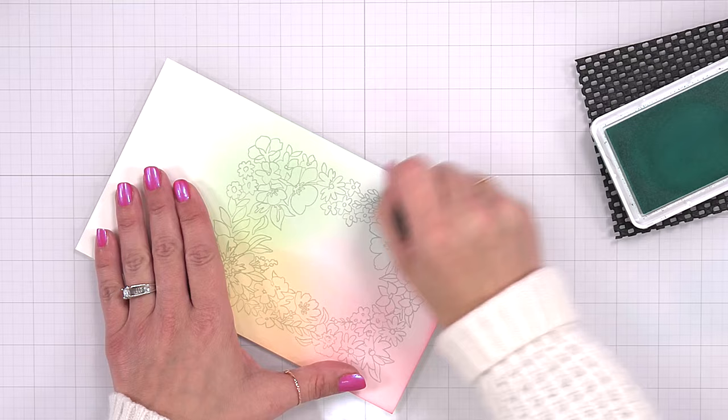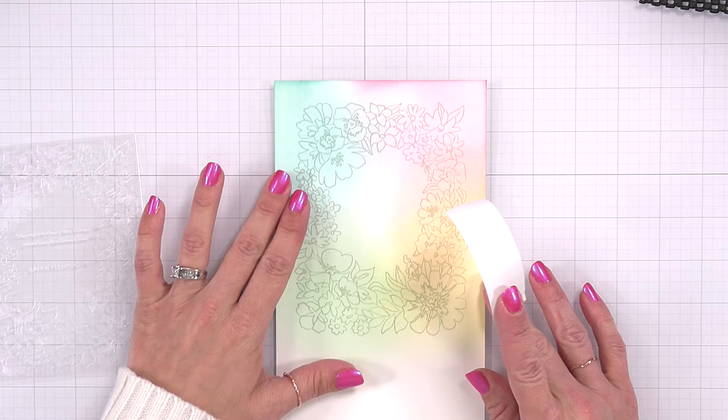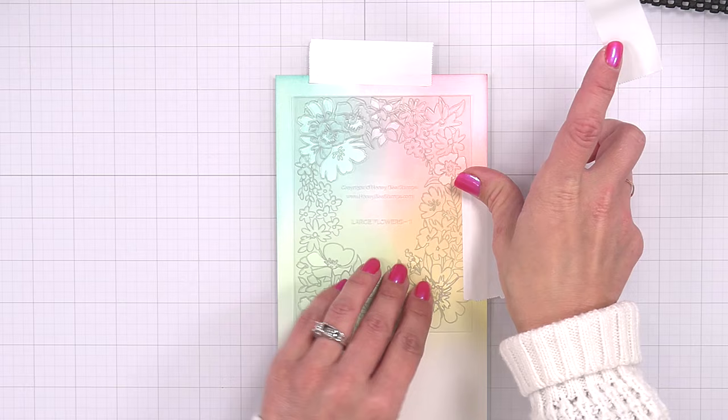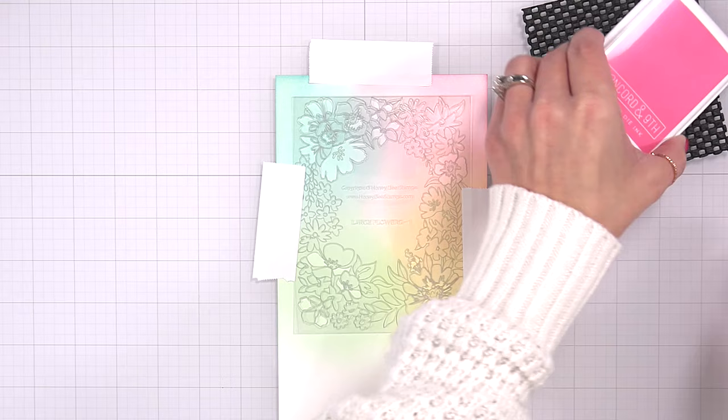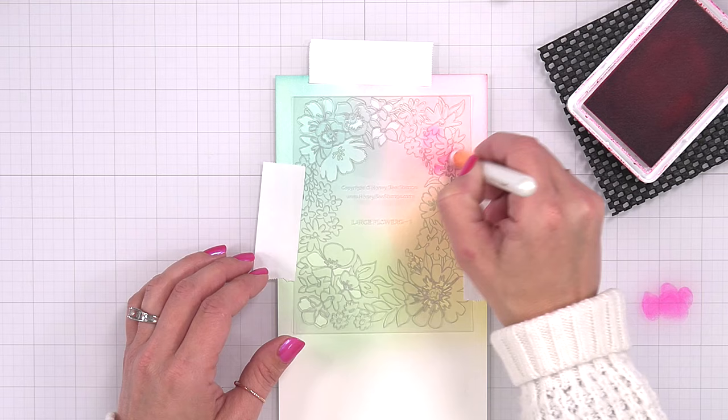After I have my base layer of ink blending done, then I can start bringing in the stencils to color in the image. Now Honey Bee Stamps stencils are clear, so I'll tape my cardstock panel down to my work surface using some post-it tape or you can use a sticky mat, whichever you're comfortable with. All of the stencils are labeled in the center, so it's like large flowers one and two, small flowers one and two. In my case, I don't really need to pay attention to that because I'm going to be using these same colors of ink throughout all of the stencils.